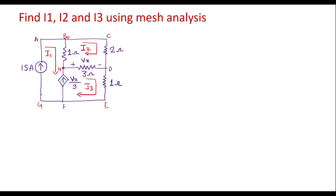In loop B, C, D, H, current I2 is flowing. In loop H, D, E, F, H, current I3 is flowing.